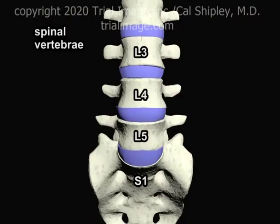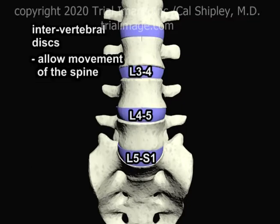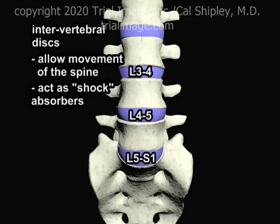In this case, we're going to be focusing on the third, fourth, and fifth lumbar and first sacral vertebrae. In between each pair of vertebrae are the intervertebral discs, which allow for movement of the vertebrae with respect to each other and act as shock absorbers for mechanical stress on the spinal column.